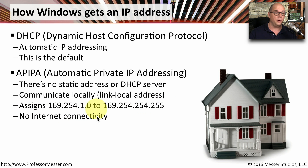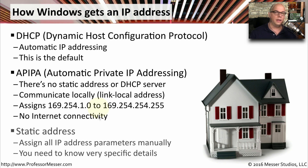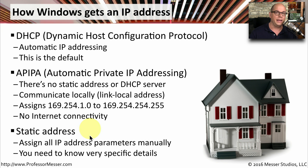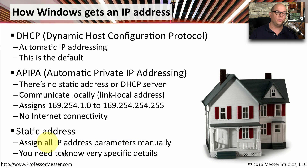You'll also notice that you have no internet connectivity, because this is a link-local address. Another option for IP addressing is a static address. With a static address, you're not relying on a DHCP server to provide an automatic address, and you're not having your operating system assign an APIPA address. Instead, you are assigning everything manually — statically putting in the IP address of your computer, the subnet mask, and any other details you need to communicate on this network. Your network administrator will provide you with all the details you need when you statically assign an IP address.